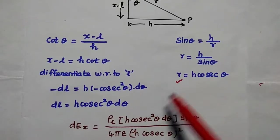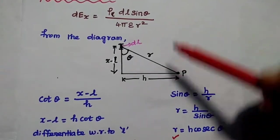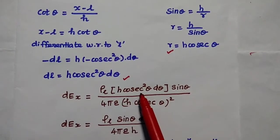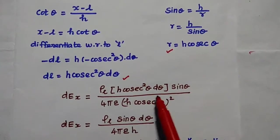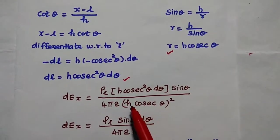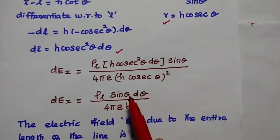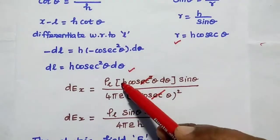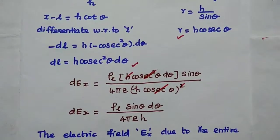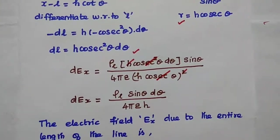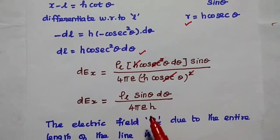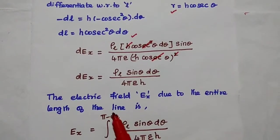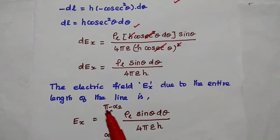Substituting, dEx = ρL · (h·csc²θ·dθ) · sinθ divided by 4πε · (h·cscθ)². The csc²θ terms cancel and the h² terms cancel, giving dEx = ρL·sinθ·dθ divided by 4πεh. Next we obtain the electric field Ex due to the entire length of the line.